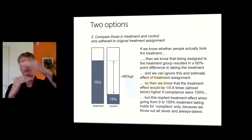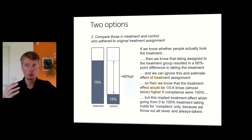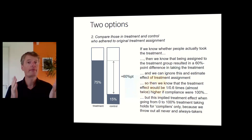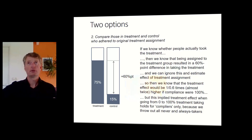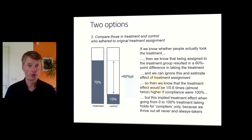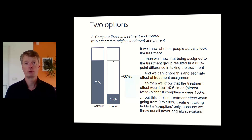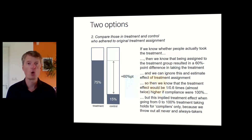You blow that effect up to the full 100%. So to summarize, when you have incomplete compliance in a randomized controlled trial, you can either ignore it, or you can estimate the effect within the group that actually complied with the treatment assignment and then scale up the estimated effect for the whole group. Obviously, this estimated effect only holds for those who actually complied with the original treatment assignment. This group of compliers may not necessarily be similar to those who never take the treatment or who would always take the treatment — something I will return to later in more detail.